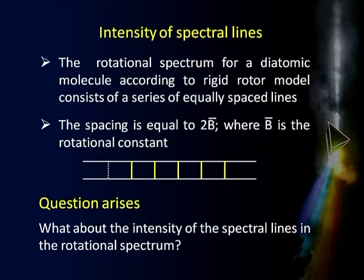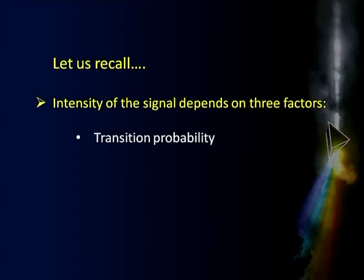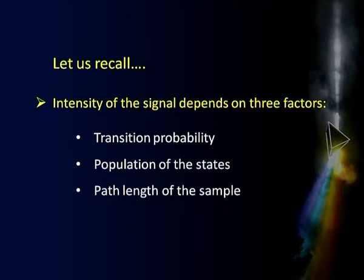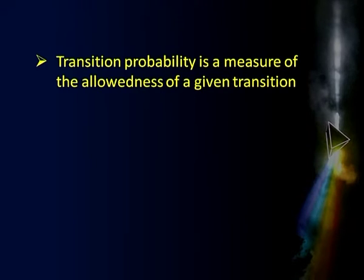Are the lines of equal intensity, or is there a variation, and why? The intensity of a signal depends on three factors: transition probability, the population of the states involved, and the path length of the sample. Transition probability is a measure of the allowedness of a given transition — how likely is a transition from one energy level to another. We compute what is called the transition dipole moment from the wave functions of the initial and final states. If it is zero the transition is not allowed; if non-zero it is allowed.